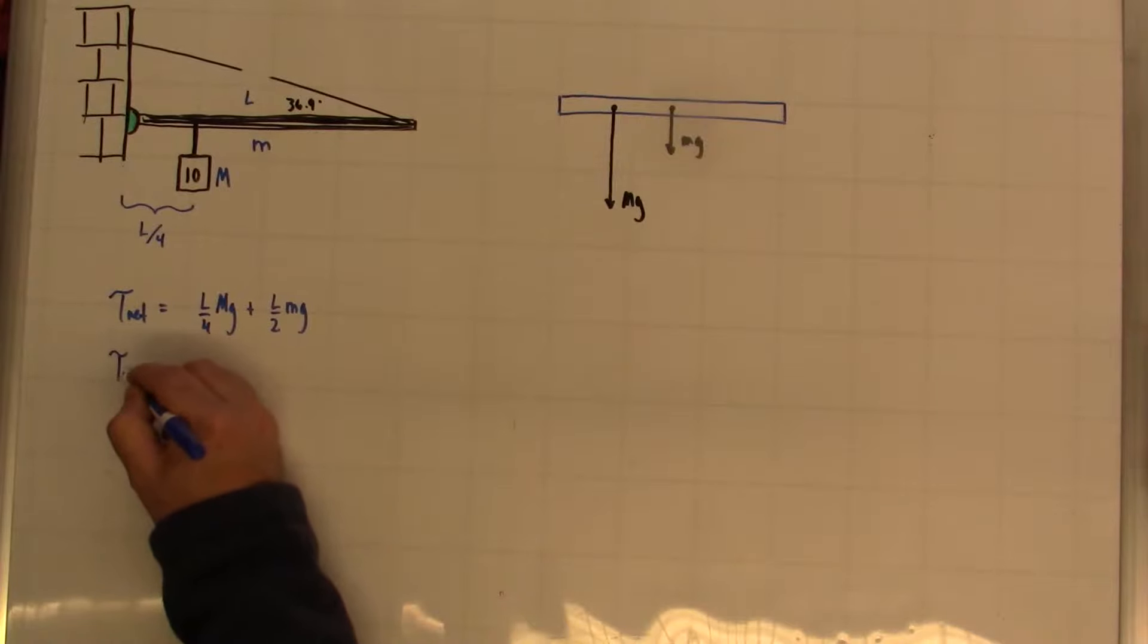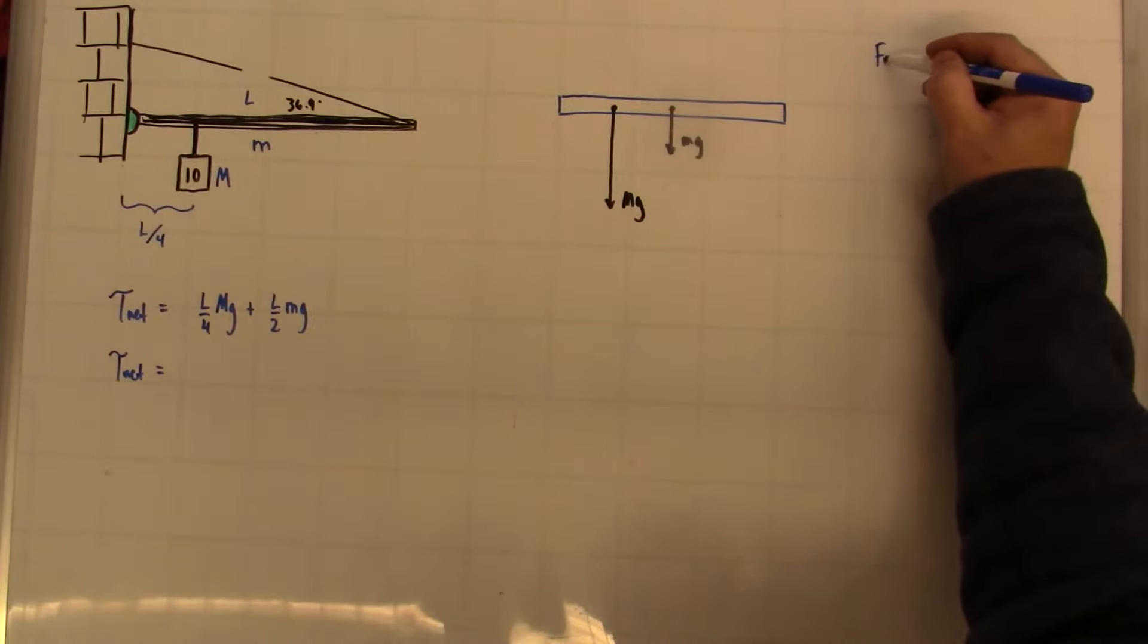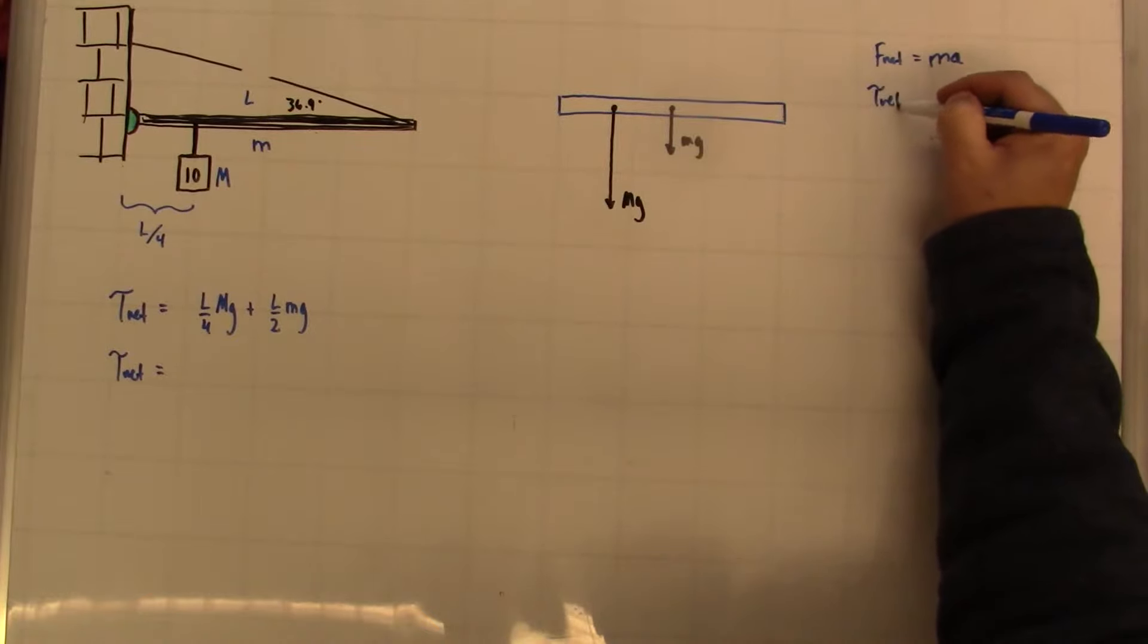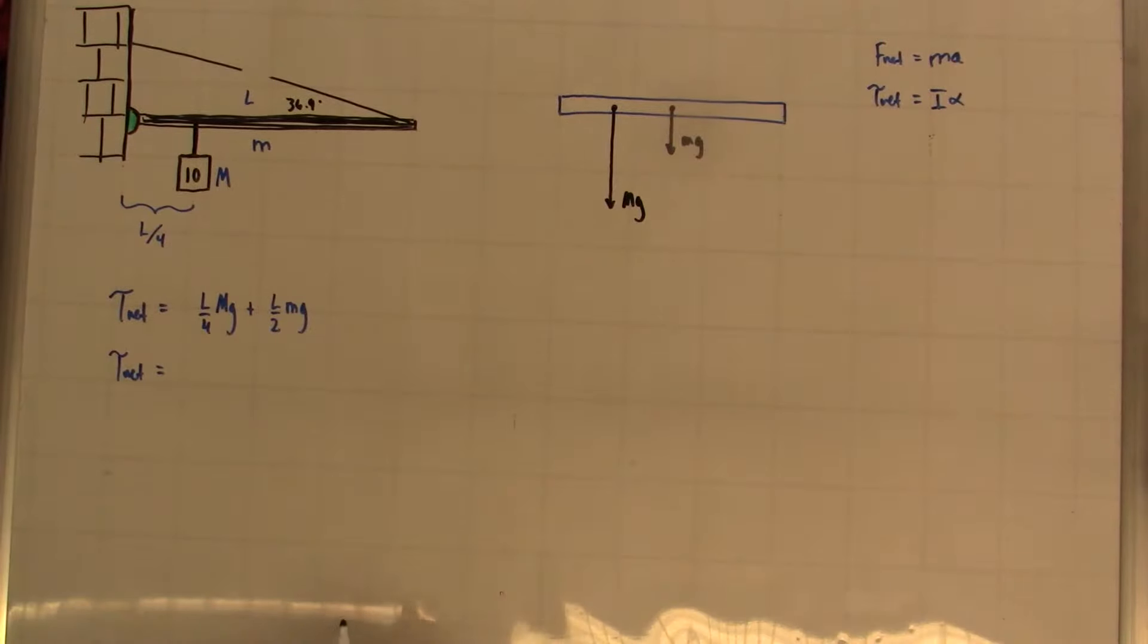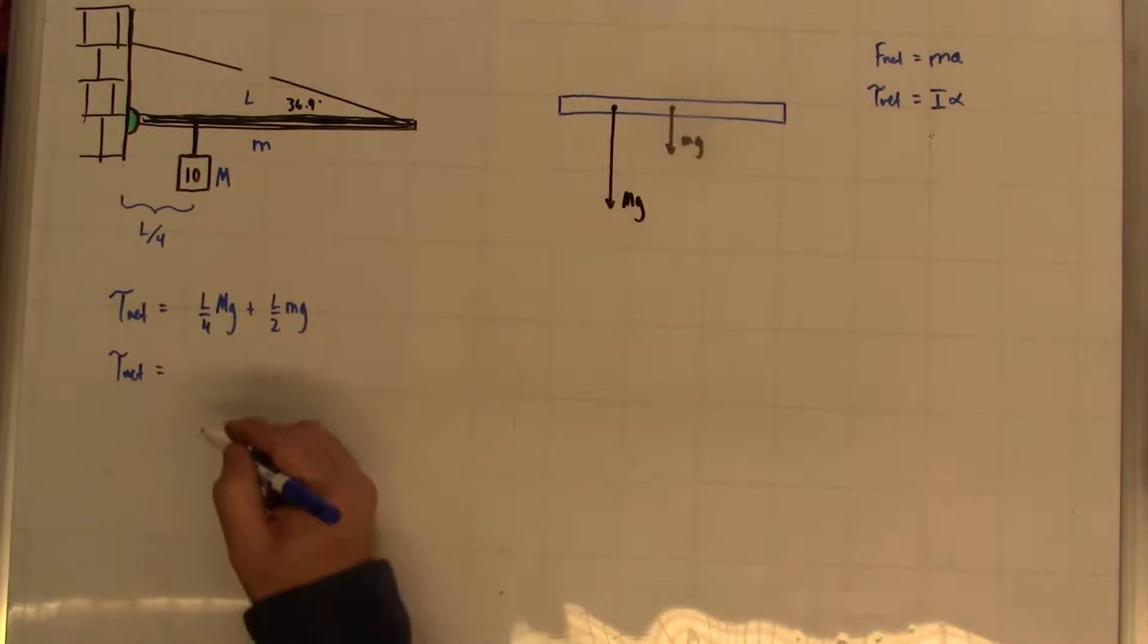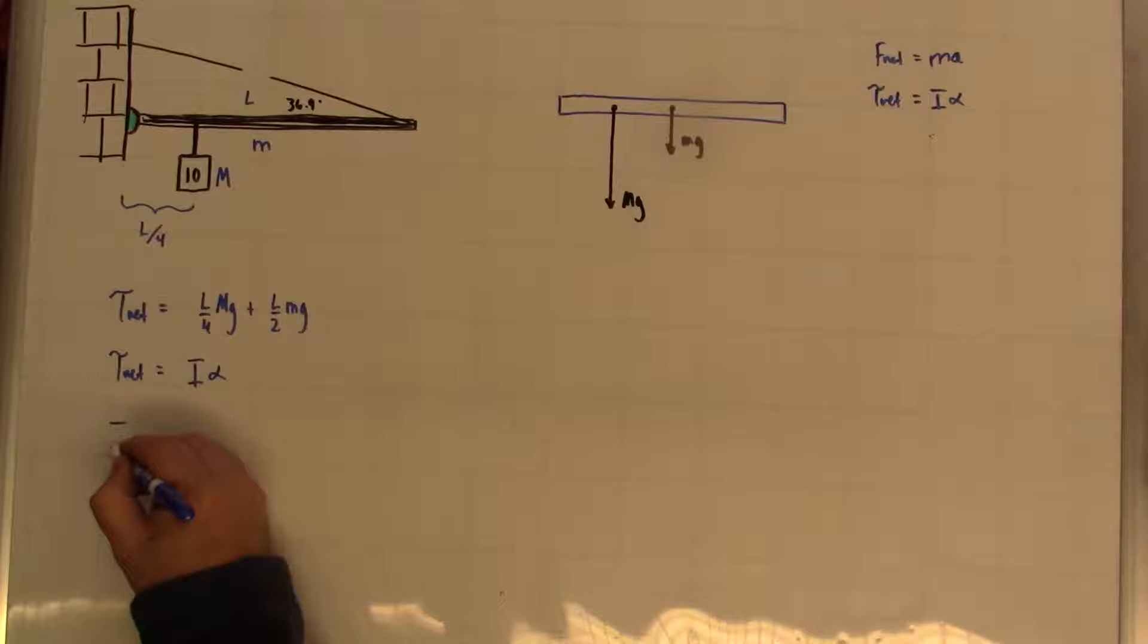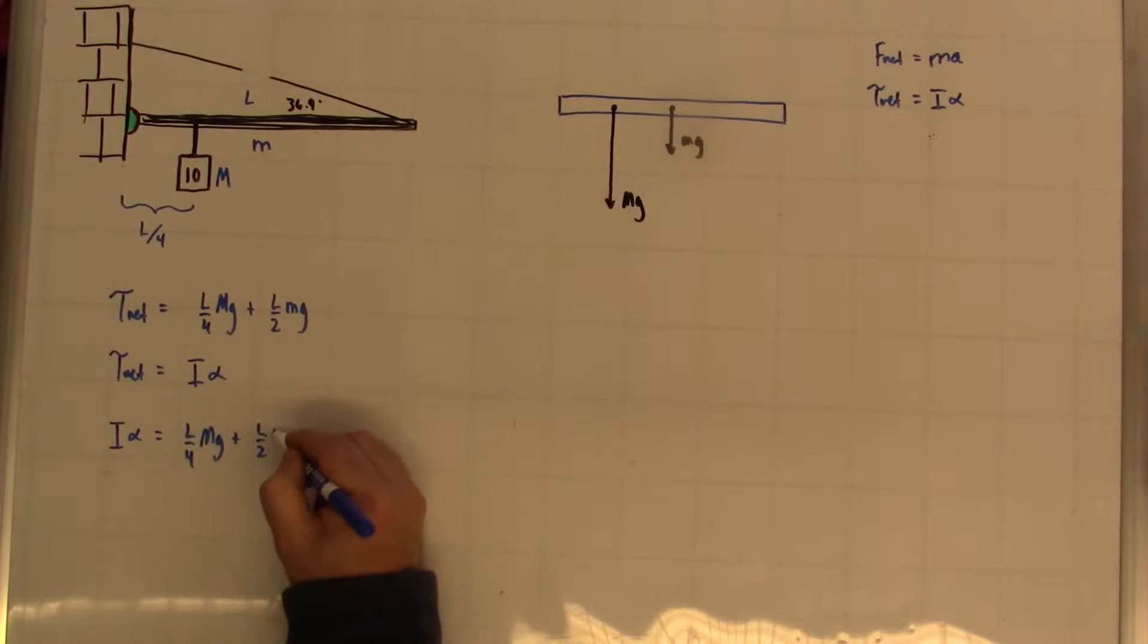In this case, Newton's second law, according to Newton's second law, the net force is equal to the mass times the acceleration. The net torque is equal to the moment of inertia times the angular acceleration. So those are Newton's second law statements that we know to be true, so let's apply that here. I have I alpha. Since these are both equal to net torque, I'm going to set them equal to each other. So I end up with I alpha is equal to L over 4 big Mg plus L over 2 little Mg.